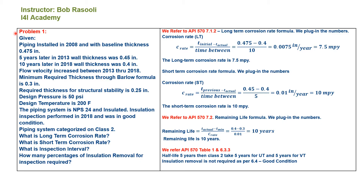Problem 1 Given: piping installed in 2008 with a baseline thickness of 0.475 inch. Five years later in 2013, wall thickness was 0.45 inch. Ten years later in 2018, wall thickness was 0.4 inch.